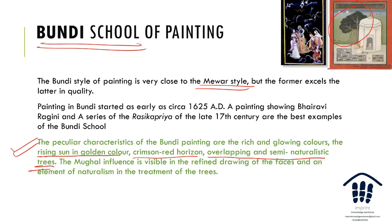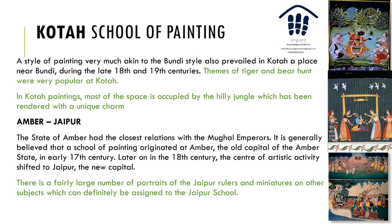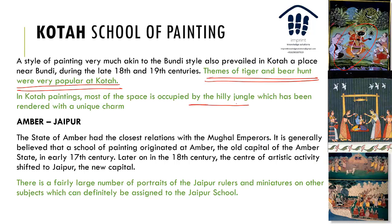The Kota school has a style of painting similar to Bundi, with Krishna depicted in a darker tone. A distinctive theme is the tiger and bear hunt, similar to Mughal paintings. Kota paintings fill the space with dense jungle, reflecting the forested hunting grounds around Kota.